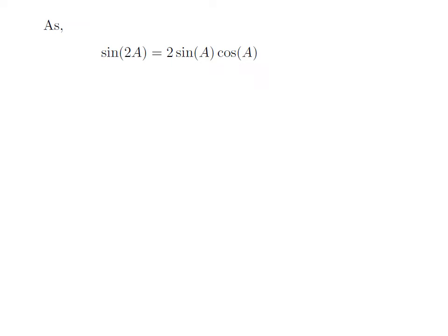As we know, sin of 2a is equal to 2 times sin of a into cosine of a. The proof of this trigonometry identity has been explained in the video appearing in the upper right corner, and the URL has also been mentioned in the description section.